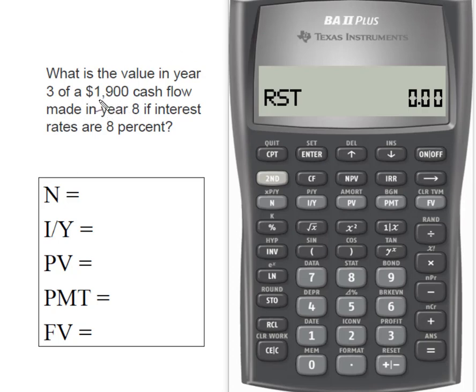So what we have is a $1,900 cash flow that's going to be made in year eight. But what I want to know is what's the value of that in year three if my interest rates are 8%.